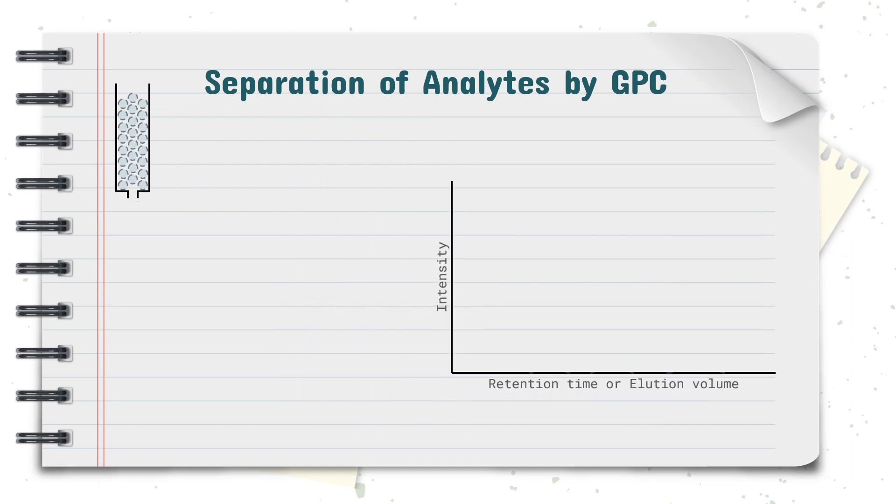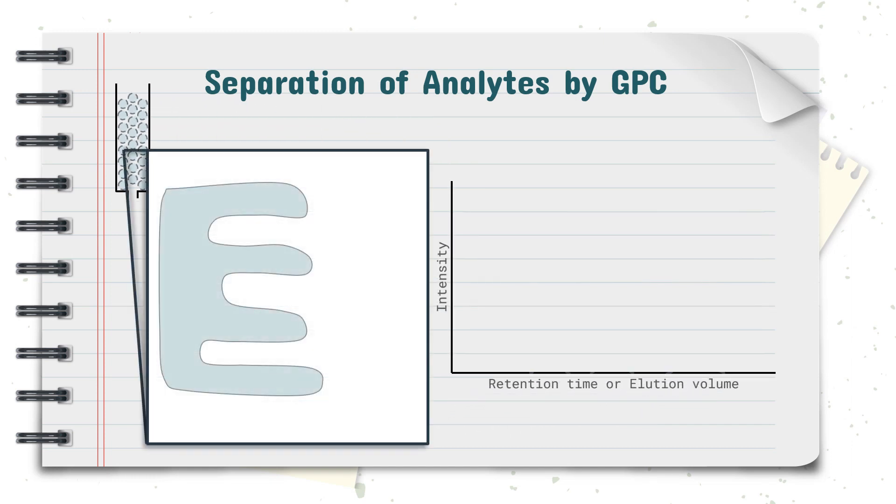The columns used in GPC are filled with material that contains many pores, and the entry of analytes into these pores is determined by their size. As seen in the animation, when dissolved molecules are introduced into the column, smaller molecules can penetrate deep into the pores.